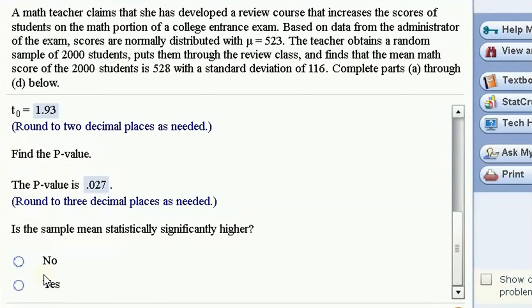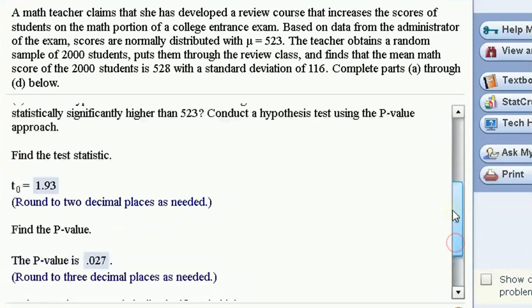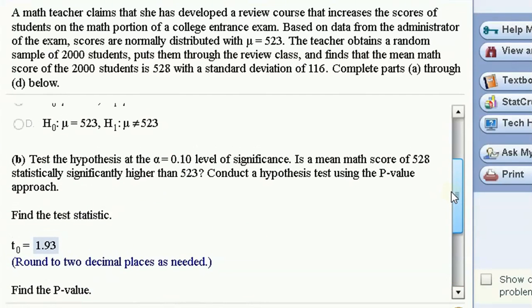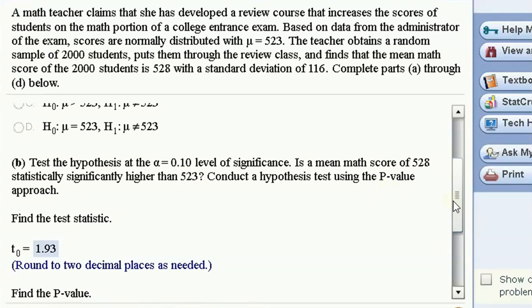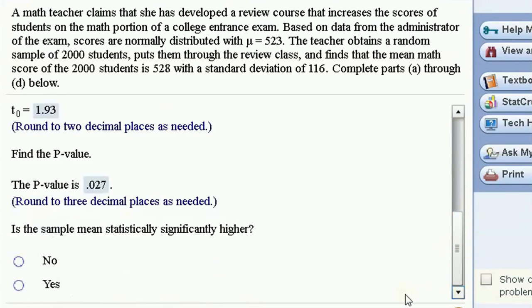Is the sample mean statistically significantly higher? Again, we're checking whether this p-value is less than the alpha level. For example, p-value of 0.027, alpha level of 0.10, that p-value is less. That means we say yes. There is statistically significant evidence that the mean is higher than the population mean from that null hypothesis.